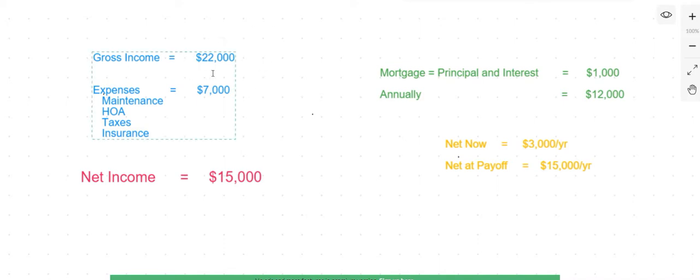Assuming you have a place with a gross income from your rent of $22,000, all you do is add up all of your expenses, maintenance, any homeowners association, taxes, insurance, all of them on an annual basis.